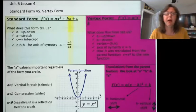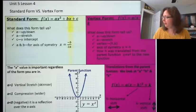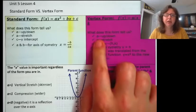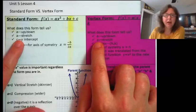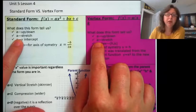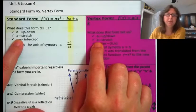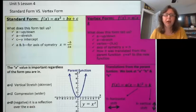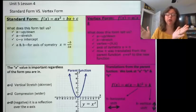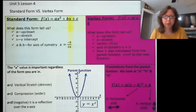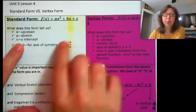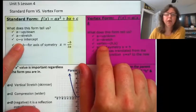If you'll take a notice at what each form tells us, we can see that vertex form gives us a lot more direct information just by looking at it. But at the very least, they both give us the a value, which tells us if the function is going to go up or down. If it's negative, it goes down; if it's positive, it goes up. And if the number is greater than one, it's going to get skinnier; if it's less than one, it's going to get wider and go out more.